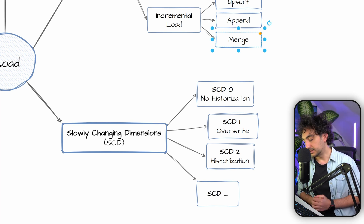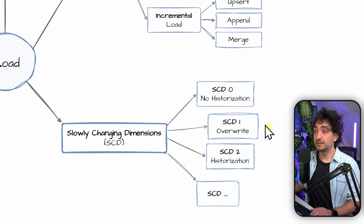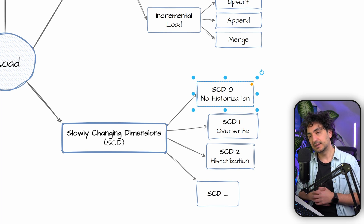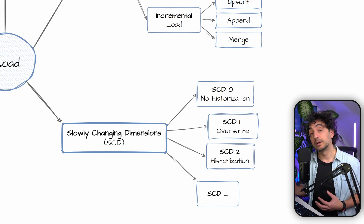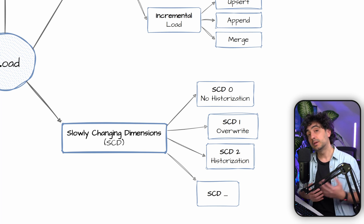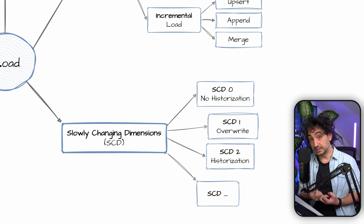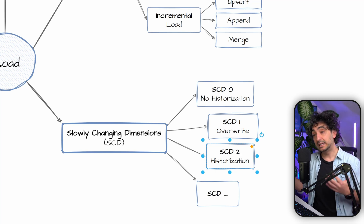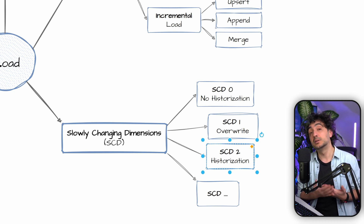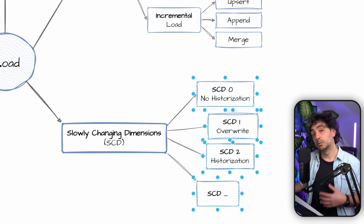In data warehousing we also have Slowly Changing Dimensions (SCD) for handling historization. SCD Type 0 means no historization — nothing is ever changed. SCD Type 1 is an overwrite: you update records with new information from the source, losing the old history. SCD Type 2 adds full historization: each change inserts a new record while the old record is marked inactive, preserving the full history.